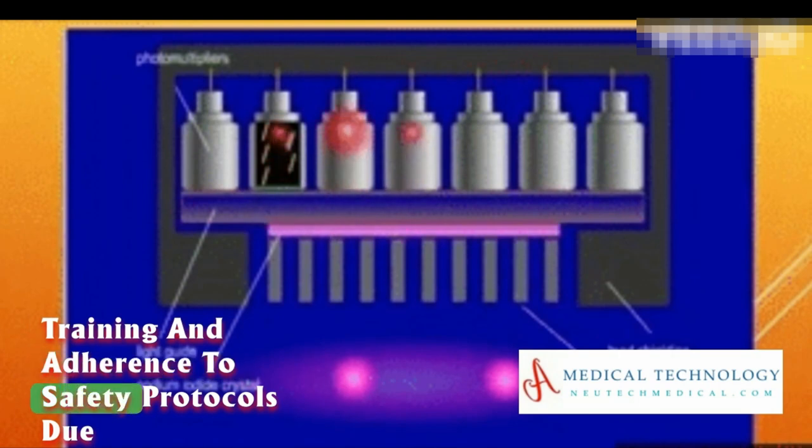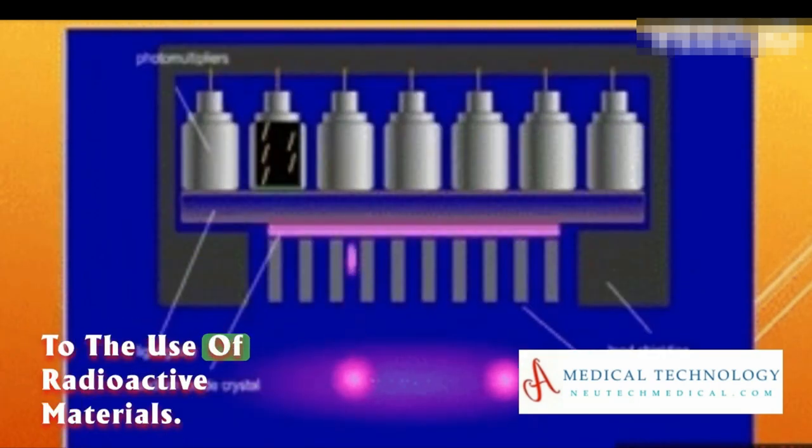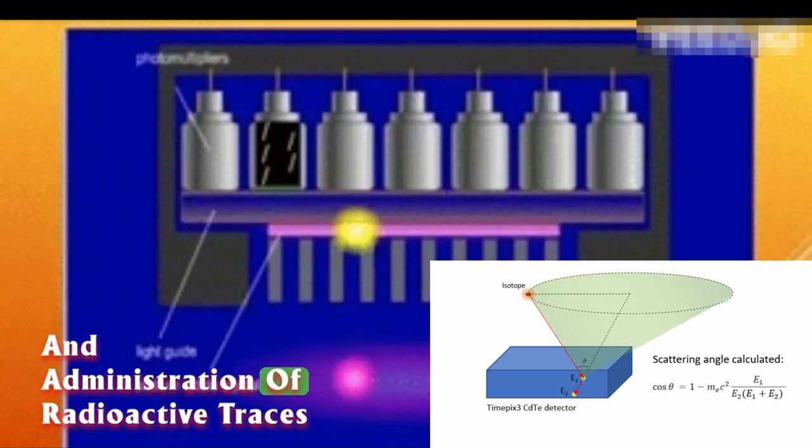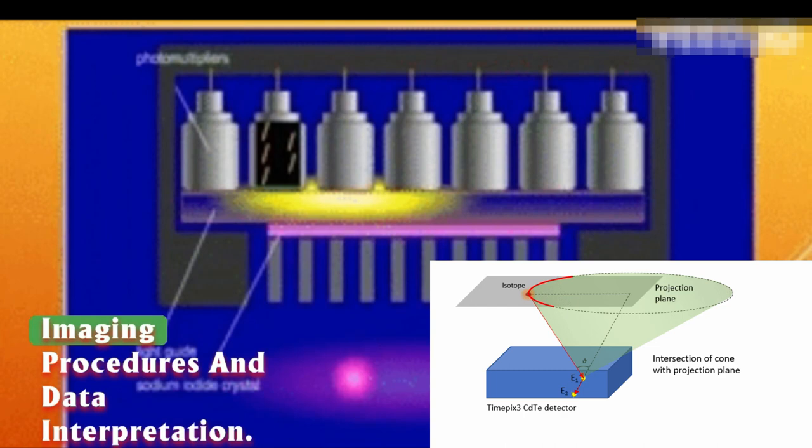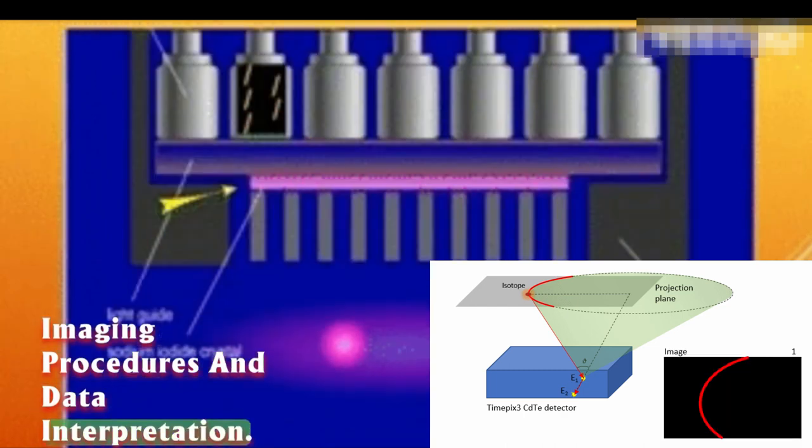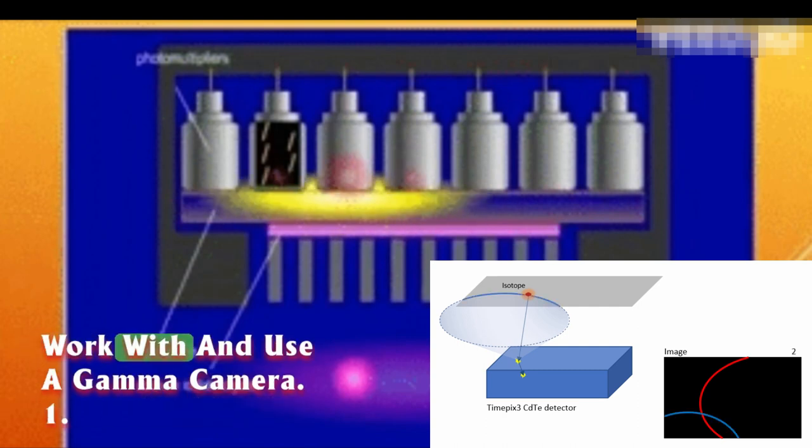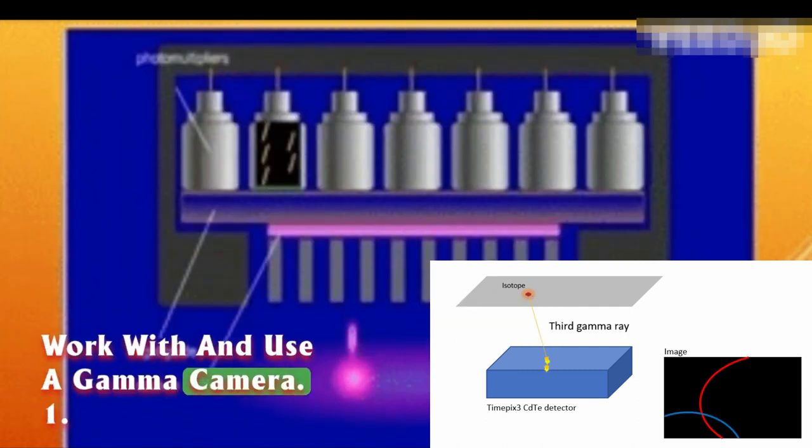Working with a gamma camera requires specialized training and adherence to safety protocols due to the use of radioactive materials. The operation involves the preparation and administration of radioactive tracers, imaging procedures, and data interpretation. Here is a general guide on how to work with and use a gamma camera.